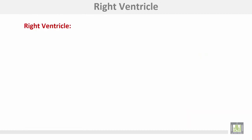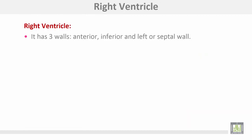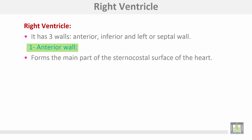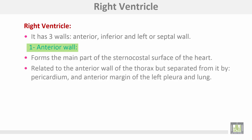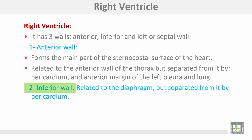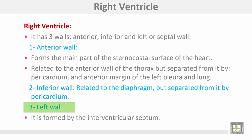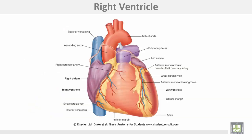The right ventricle has three walls: anterior, inferior, and the left or septal wall. The anterior wall forms the main part of the sternocostal surface of the heart and is related to the anterior wall of the thorax but separated from it by the pericardium and the anterior margin of the left pleura and lung. The inferior wall is related to the diaphragm but separated from it by the pericardium. The left wall is formed by the interventricular septum.